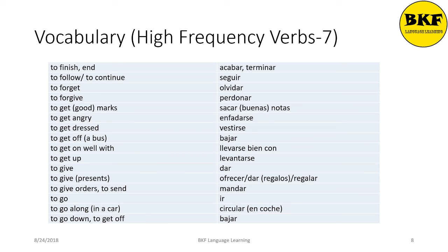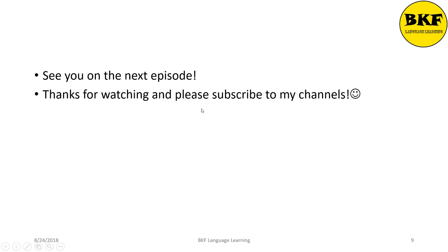'To get off a bus' is bajar. 'To get on well with' is llevarse bien con. 'To get up' is levantarse. 'To give' is dar. 'To give presents or gifts' is ofrecer, dar regalos, or regalar. 'To give orders' is mandar. 'To go' is ir. 'To go along in a car' is ir en coche. 'To go down or get off' is bajar. That's it for this session — thanks for watching, please subscribe, see you next episode!